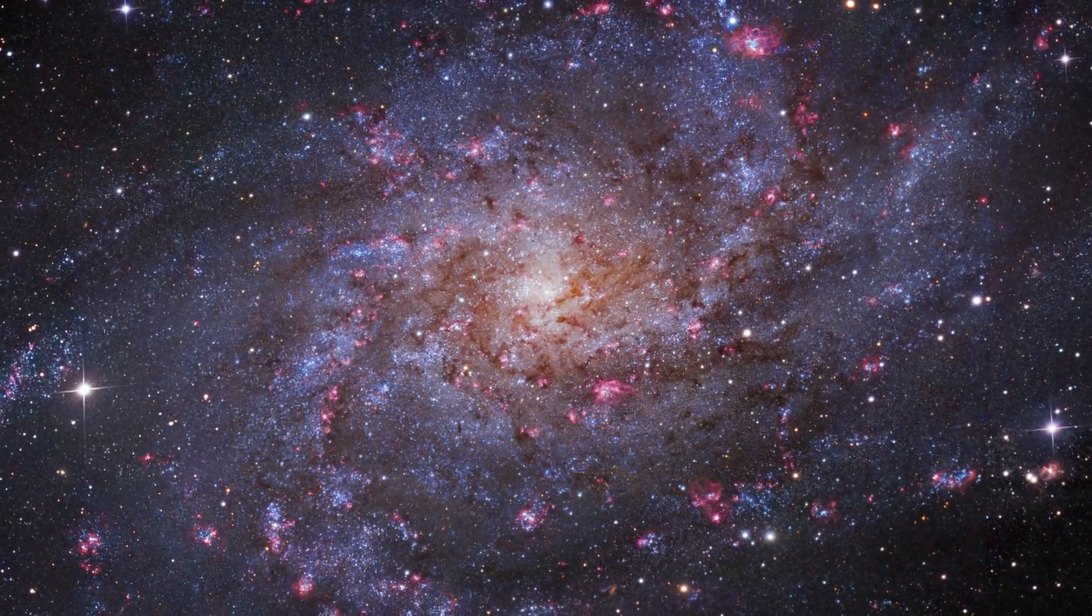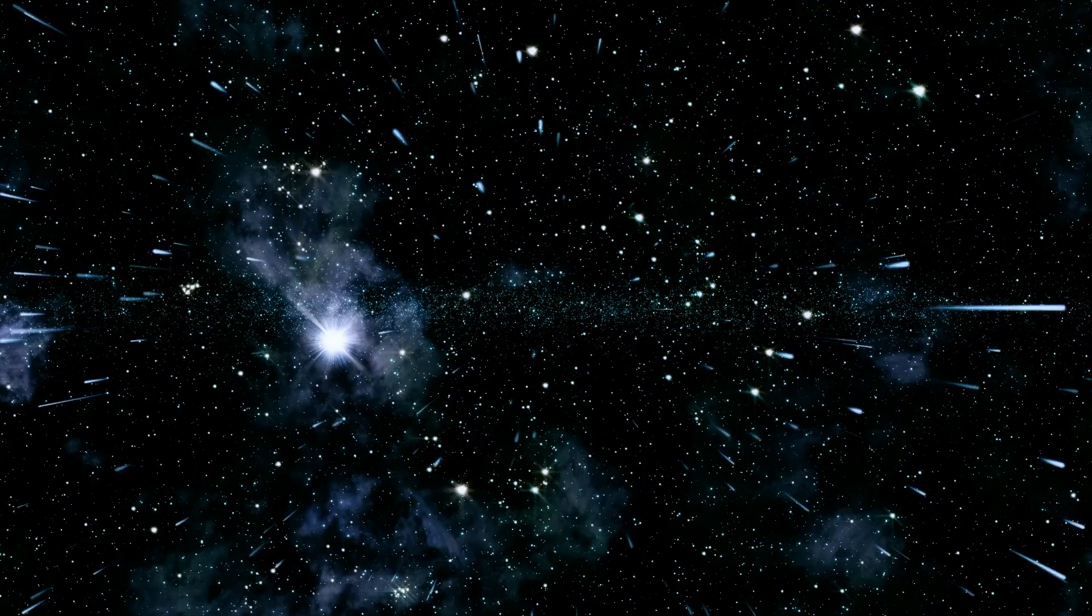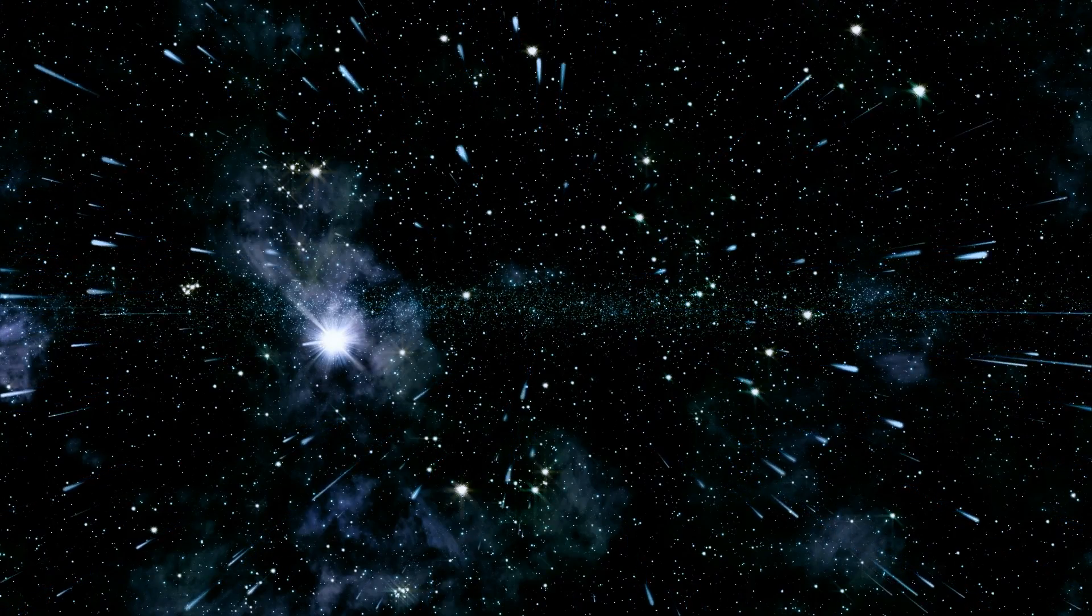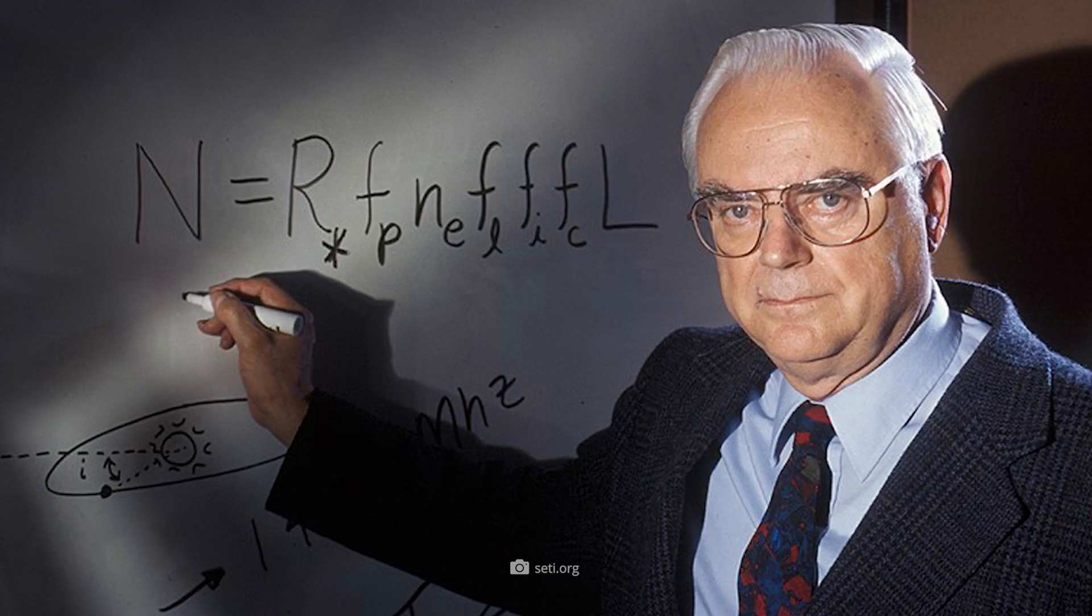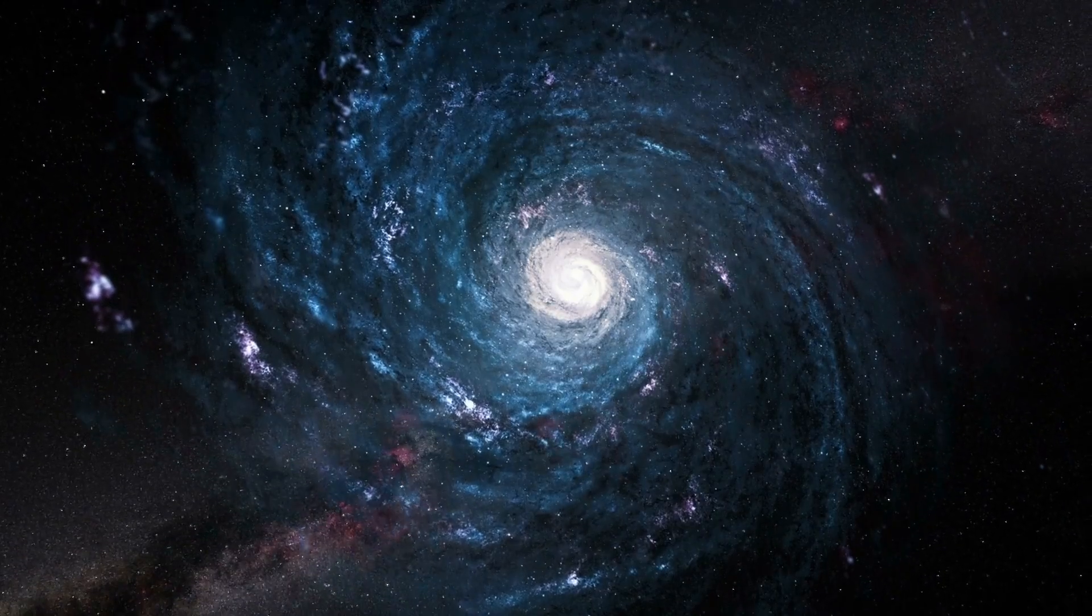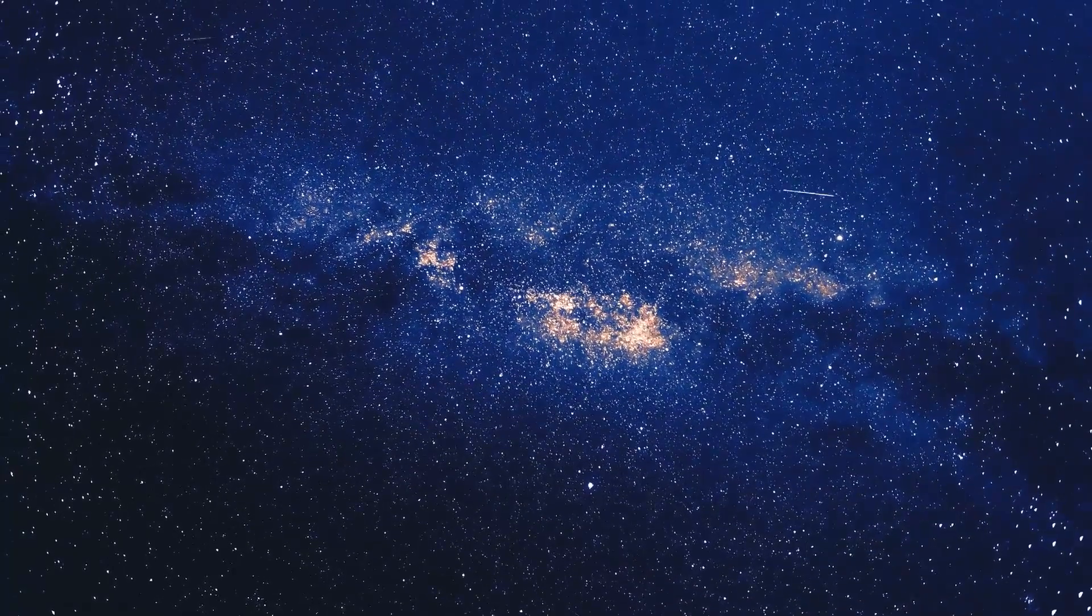The pioneering formula was presented for the first time in November 1961 at a conference in the U.S. American city, Green Bank. Frank Drake, the astrophysicist who developed the equation, devoted himself to the question of how many advanced civilizations could develop within one year in our home galaxy.